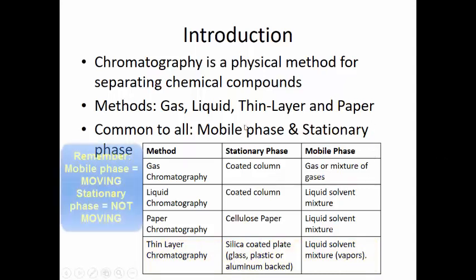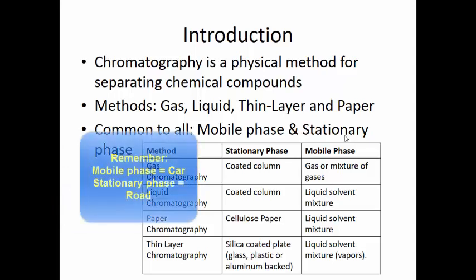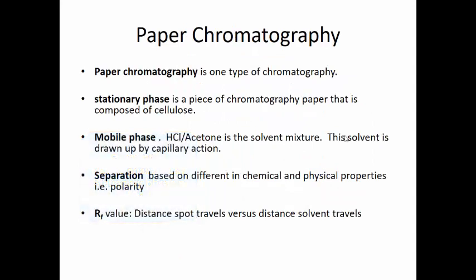The mobile phase is the phase that actually moves — in this case a gas, liquid, or mixture. The stationary phase is the phase that does not move; it's where molecules either pass over or adhere to, moved along by capillary action or wicking. For paper chromatography, the stationary phase is chromatography paper made of cellulose, which helps determine which compounds adhere better to the paper than others.